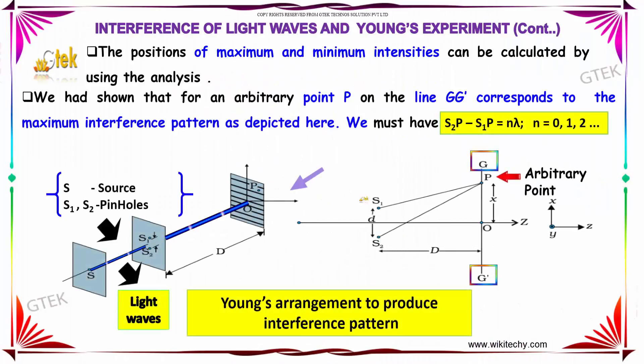The position of maximum and minimum intensity can be calculated by using the analysis below. We have shown that for an arbitrary point P on the line GG' corresponding to the maximum interference pattern,